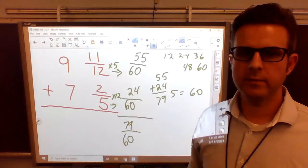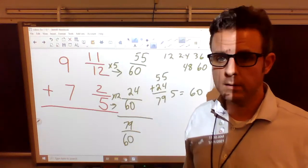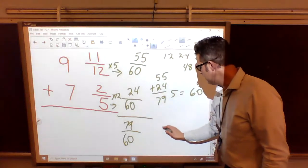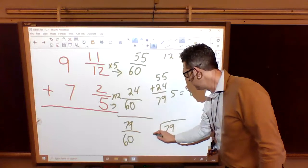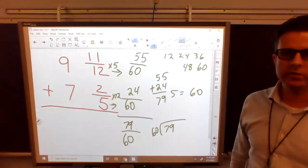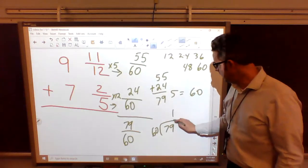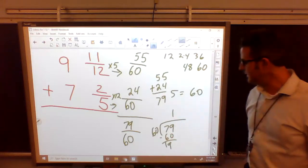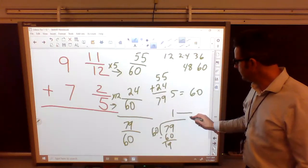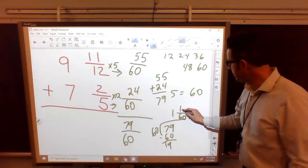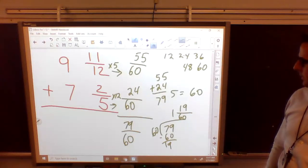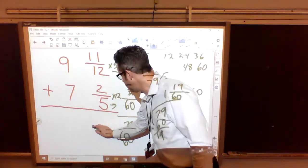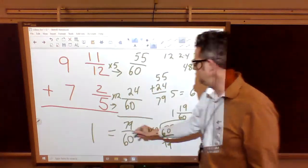Now that is an improper fraction. The top number is bigger than the bottom. So we need to divide. That fraction line means divided by. So we need to do 79 divided by 60. How many times will 60 fit into 79? Just once. What are we left with? We're left with 19. We're still dealing with 60. So we put 60 on the bottom and 19 at the top. So this 79 over 60 is really 1 and 19/60.